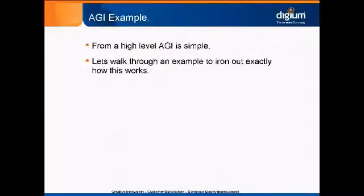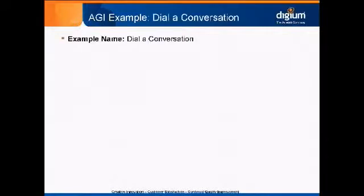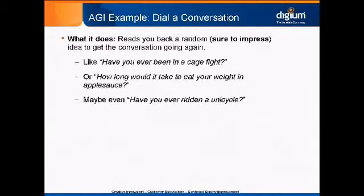From a high level, AGI is pretty simple. I want to go through an example called Dial-a-Conversation. What it does is eliminate awkward silences — if you don't know what to say and you're a nerd who has configured this app, you can dial in and get some classy conversation starters. Things like: have you ever been in a cage fight? How long would it take to eat your weight in applesauce? Or have you ever ridden a unicycle?